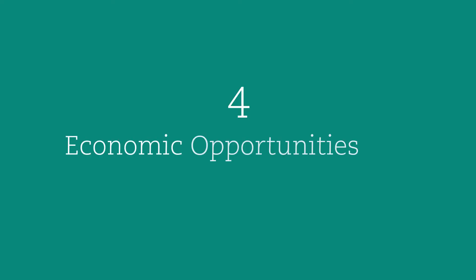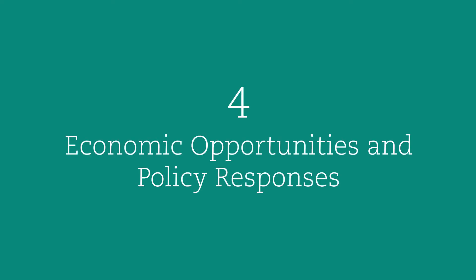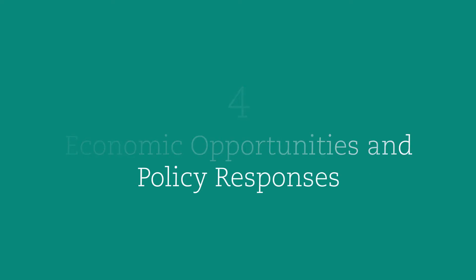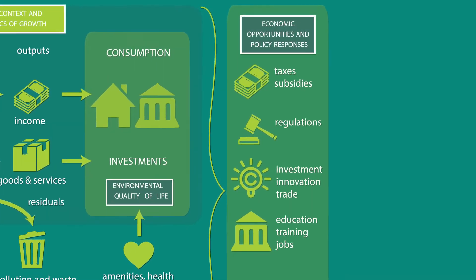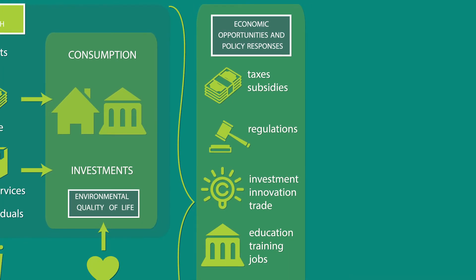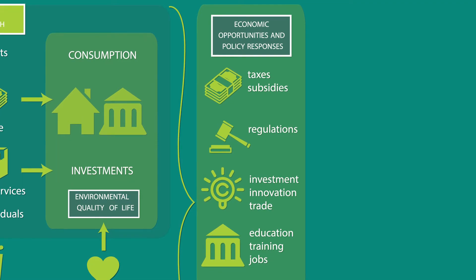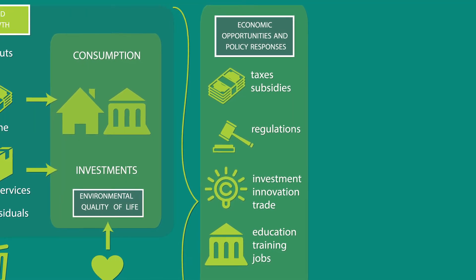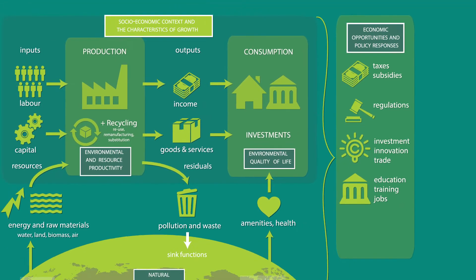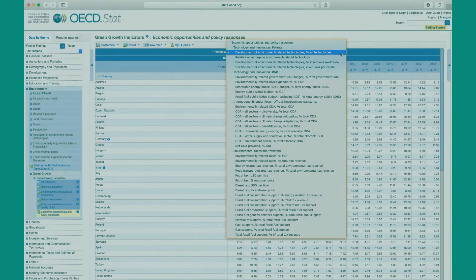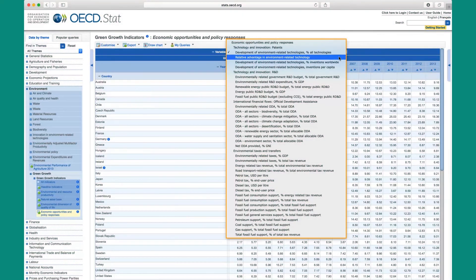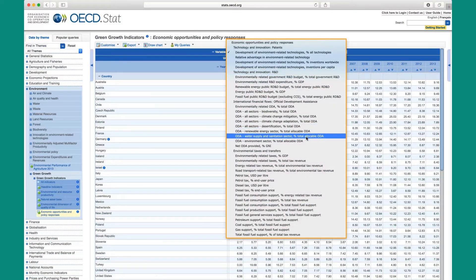The fourth group of data is on Economic Opportunities and Policy Responses. These indicators measure the economic opportunities associated with green growth and how the economy responds to it. They help evaluate the effectiveness of policy in delivering green growth. For example, we can monitor the progress of environmental innovation compared to other types of innovation.